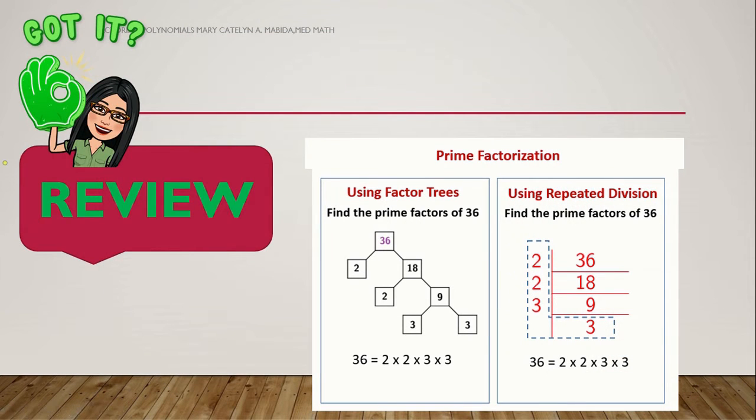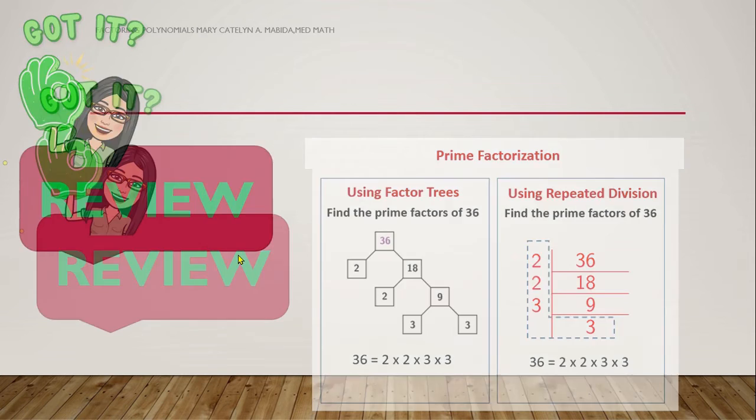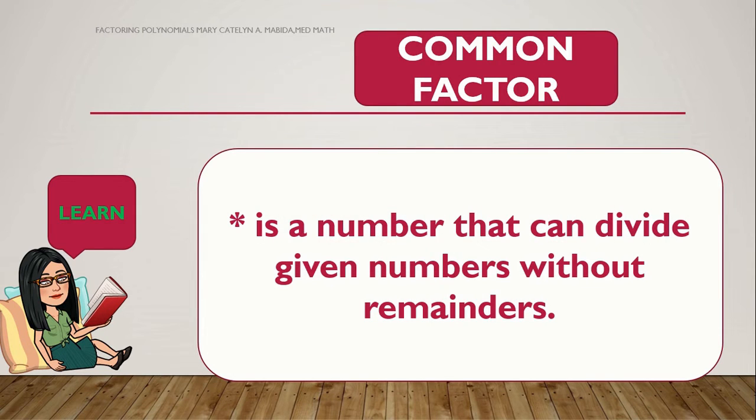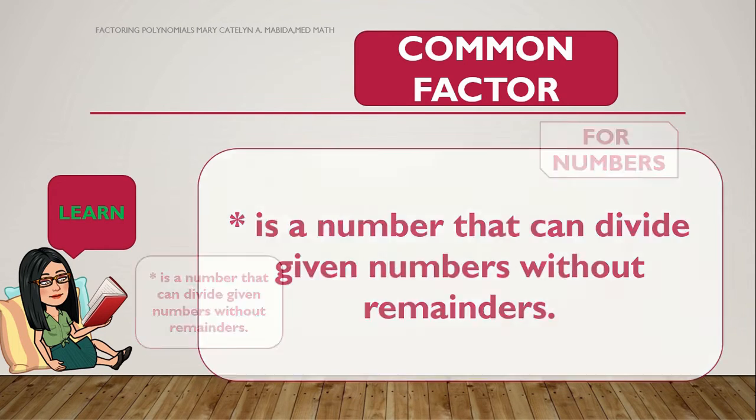Again, there are two ways wherein we can get the prime factors of our numbers. Now, we have the repeated division. And here, we have our factor trees. Alright! You got it! Now, what is a common factor? It is a number that can divide given numbers without remainders. Now, how do we get common factors of numbers?